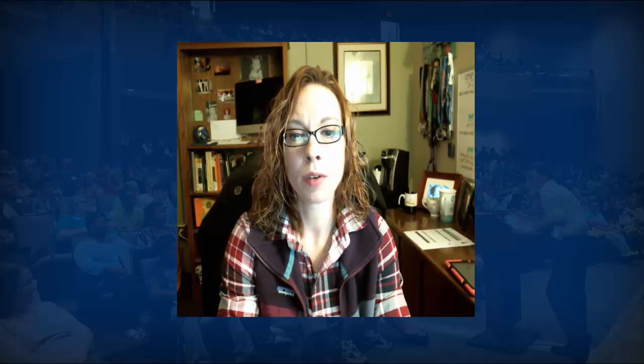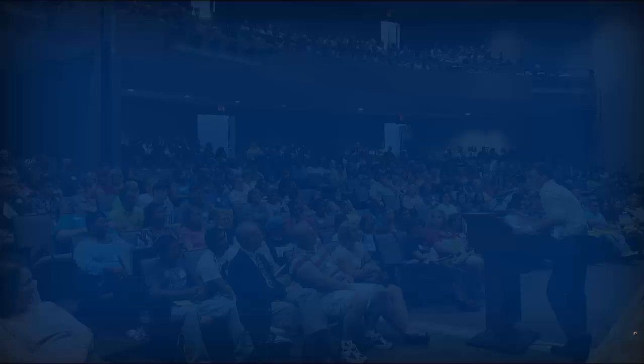The second category is administrative information systems. Administrative information systems are designed to help an organization carry out any types of financial and administrative support functions they need as part of a business structure — things like payroll, how we bill and code to the patient and the insurance, anything financial or administrative related.